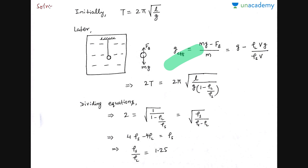If you want to understand what g_effective is and how to calculate it, or how buoyancy as a constant force changes the time period via torque, watch the 'simple pendulums' lesson from the SHM course. The concept is: replace g with g_effective. Variations include a pendulum in an accelerating lift, where g_effective becomes g + a or g − a depending on the direction of pseudo force, and then T = 2π√(L/g_effective). That's the type of question you can have on simple pendulums.